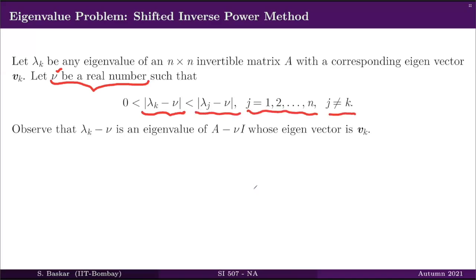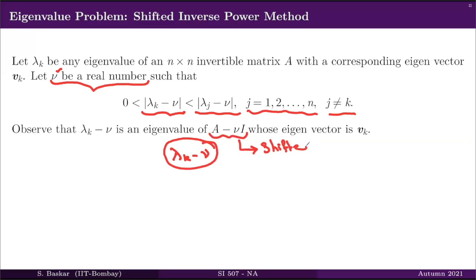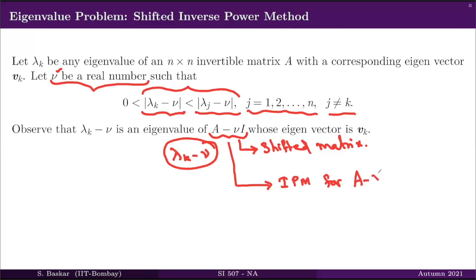What we are doing is choosing a real number nu such that lambda_k - nu becomes the smallest eigenvalue of the shifted matrix A - nu·I. This shifted matrix has smallest eigenvalue lambda_k - nu, which is also unique. We can then apply the inverse power method to the matrix A - nu·I, which means applying the power method to (A - nu·I) inverse.